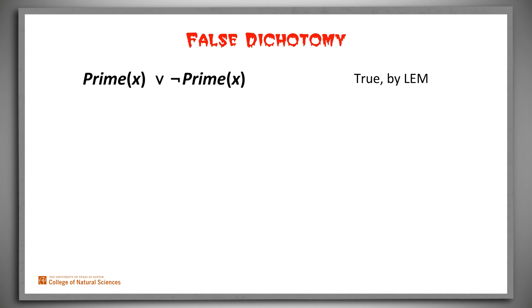For example, suppose that p is the primality property. Then for any x, the Law of the Excluded Middle tells us that x is prime or it isn't. But can we say that x must be prime or composite? Now the answer is no.